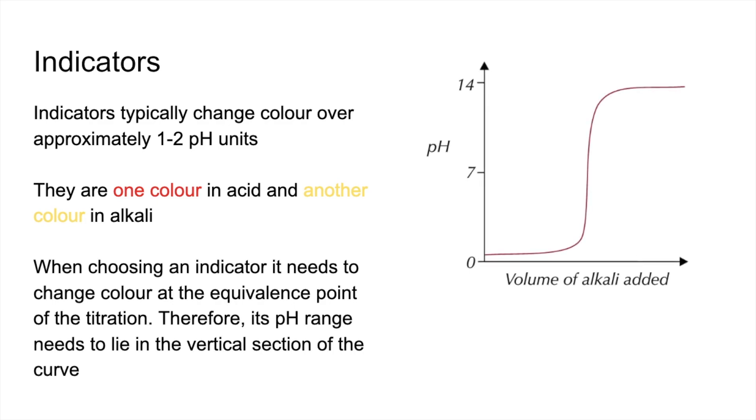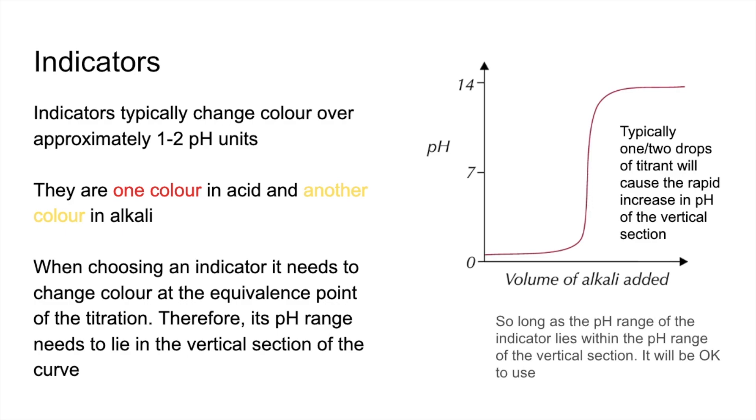If we look at one of the curves again, typically one or two drops of the substance in the burette, the titrant, is going to cause this rapid pH change. As long as the pH range of the indicator lies in this vertical section, it's going to catch that part of the titration.